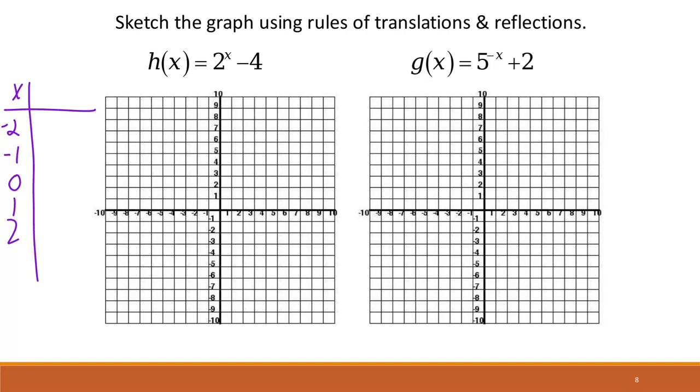And so then we can graph 2x minus 4. We're just substituting into that formula, right? So we're doing 2 to the negative 2 minus 4 for that first one.